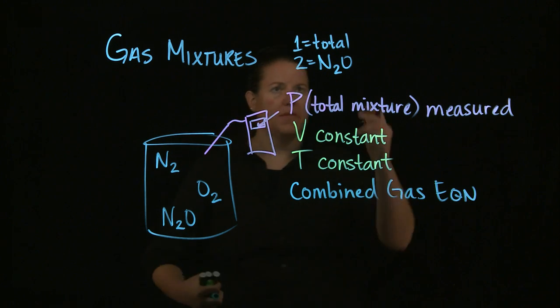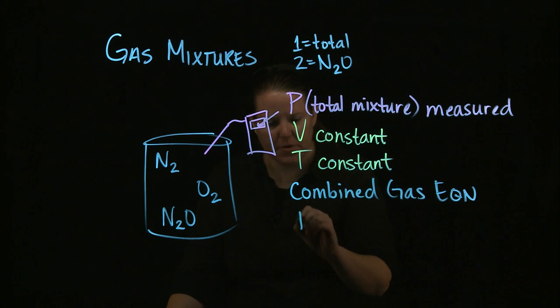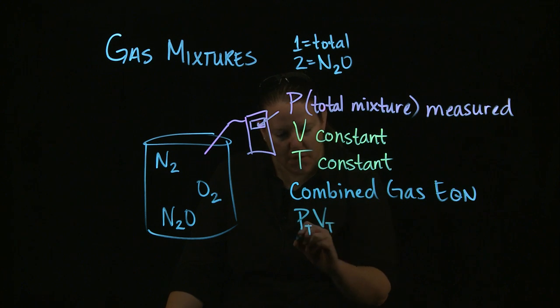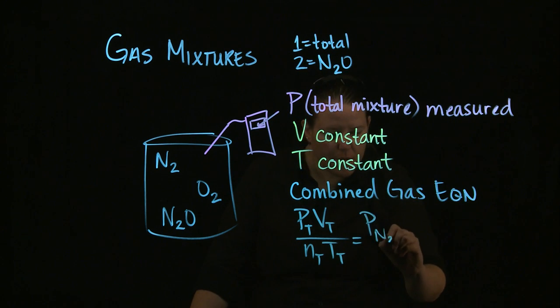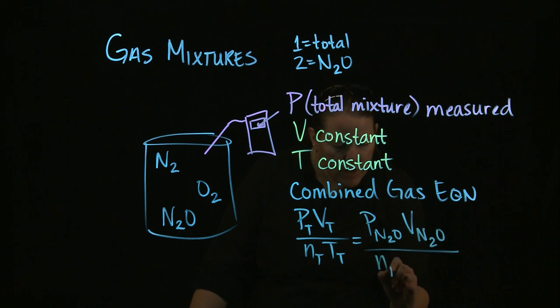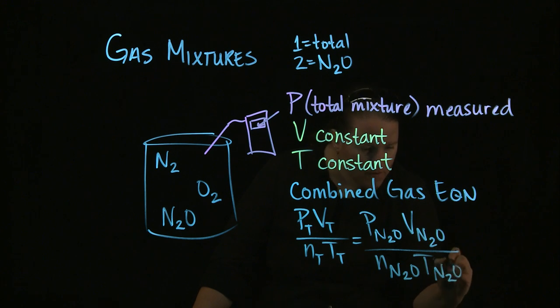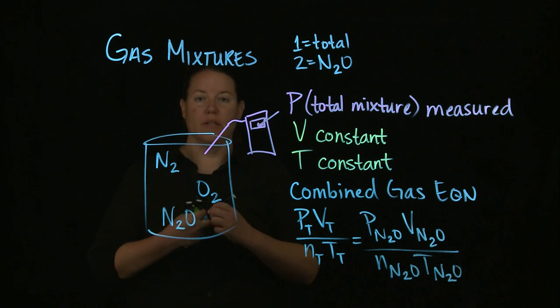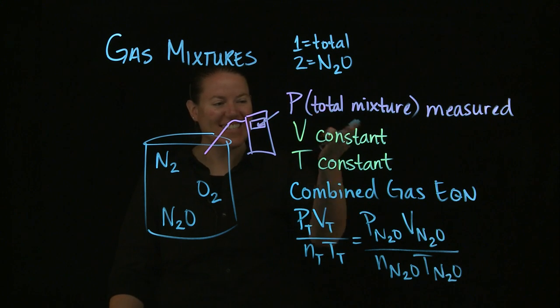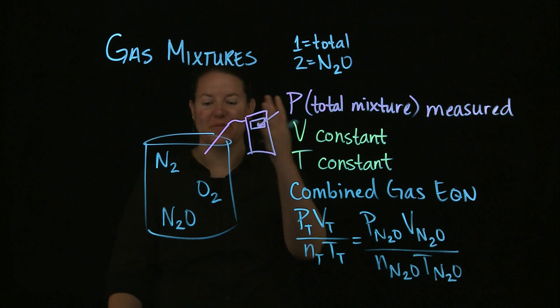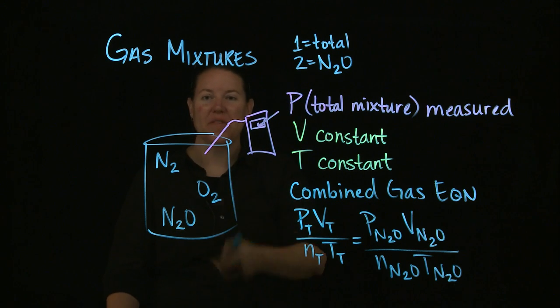What are we going to do? We know that the combined gas equation is P1 V1 over N1 T1 equals P2 V2 over N2 T2. What if instead of specifying ones and twos, I specified ones as the total and twos as the specific set of variables for one of these gases, let's do N2O.